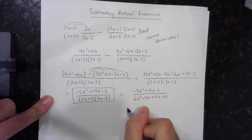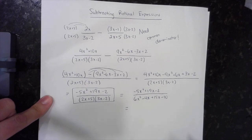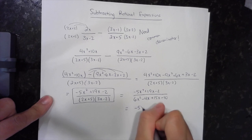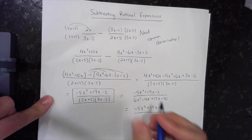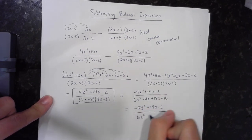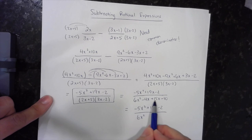Almost completely there, because last but not least, I have like terms on the bottom, and I have to combine them. So I'm going to keep the top all the same, because it doesn't factor, it doesn't really simplify. And the bottom I'm going to go ahead and combine like terms, negative 4x plus 15x, plus 11x, minus 10.